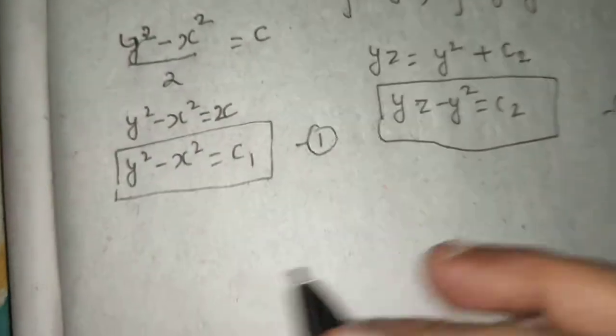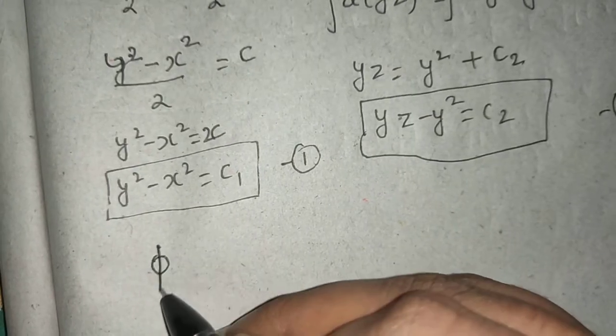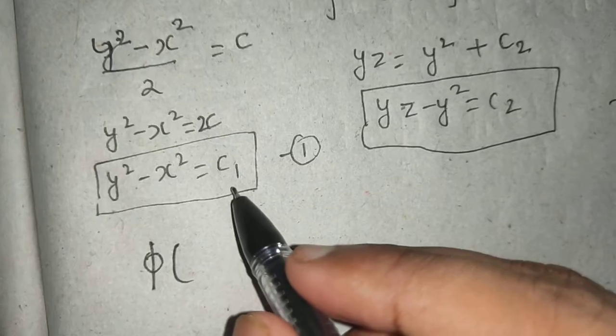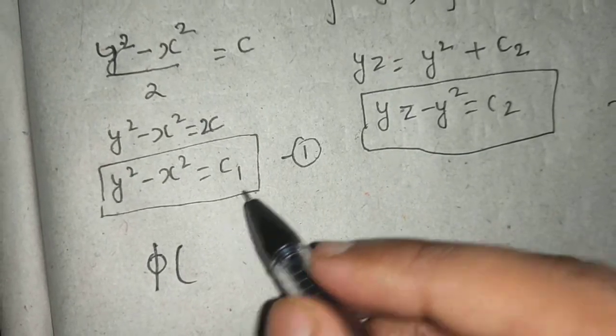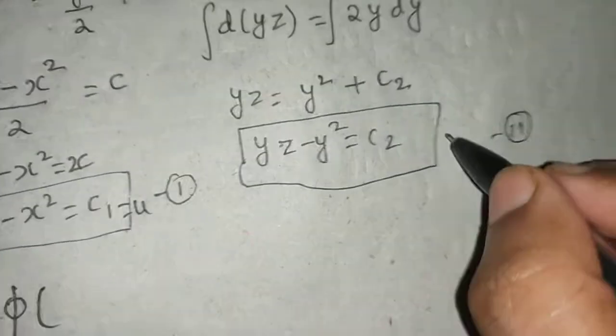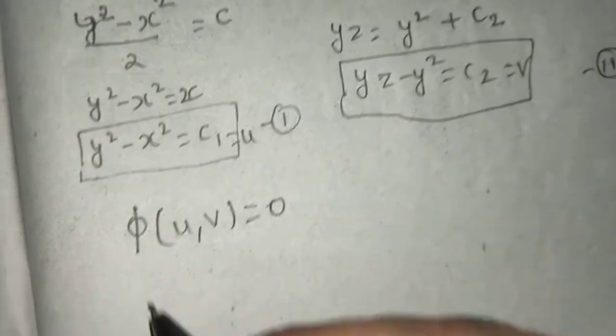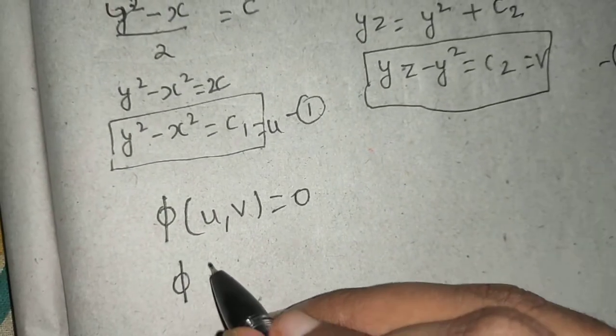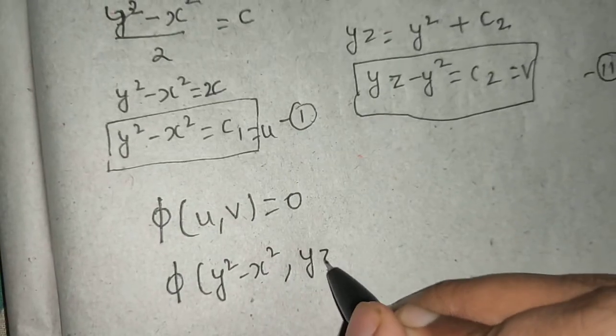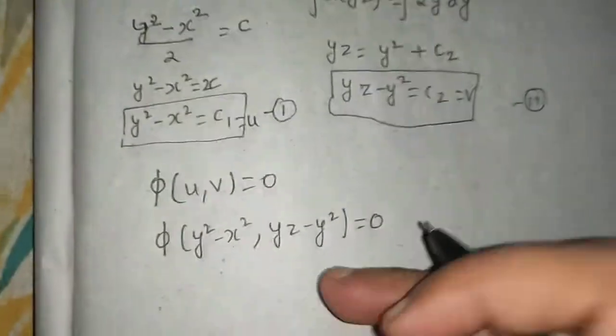Now the final solution which we write is φ(u, v) = 0. You can name this to be equal to u and this to be equal to v. So φ(y² - x², yz - y²) = 0. This becomes your final answer.